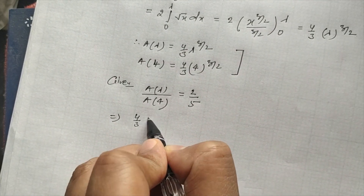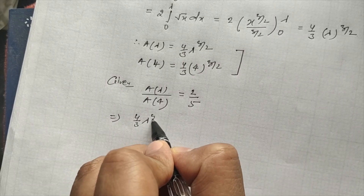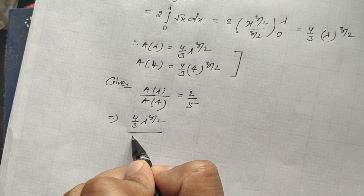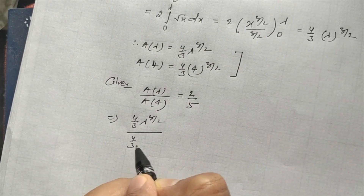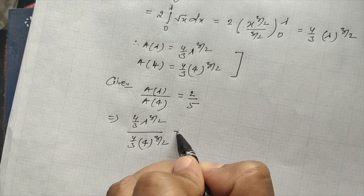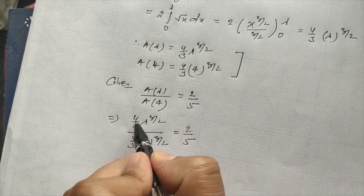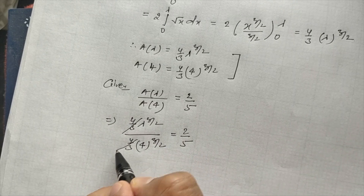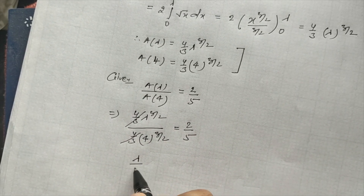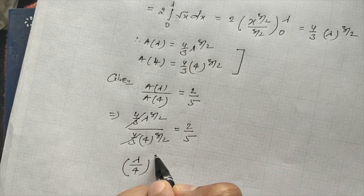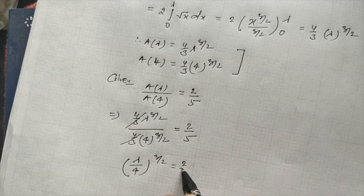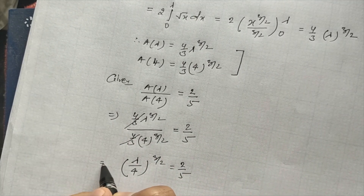Substituting, we have (4/3) × λ^(3/2) divided by (4/3) × 4^(3/2) equals 2 by 5. The (4/3) factors cancel out, giving us (λ/4)^(3/2) equals 2 by 5.